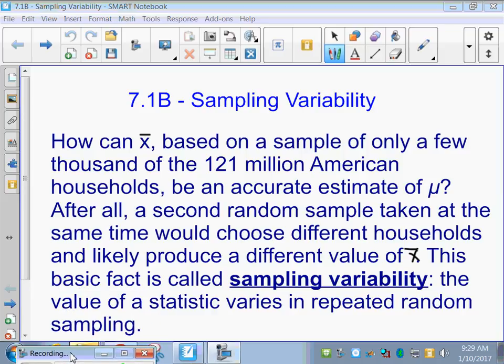So how can X bar, based on a sample of only a few thousand of the 121 million American households, be an accurate estimate of mu? How can our sample be an accurate estimate of the actual population information we're trying to find? After all, a second random sample taken at the same time would choose different households and likely produce a different value of X bar.